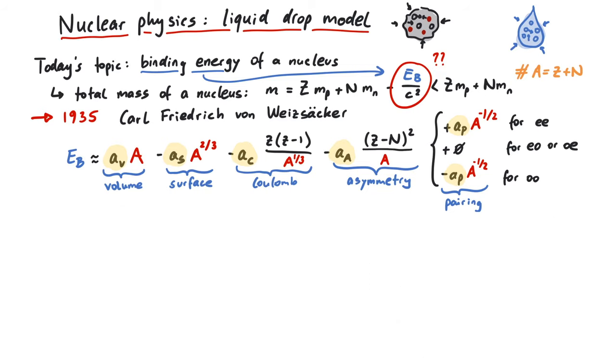To summarize, we talked about the liquid drop model of the nucleus and came up with an equation to calculate the binding energy. Since we included both theoretical considerations as well as experimental observations, this formula is often called semi-empirical mass formula.